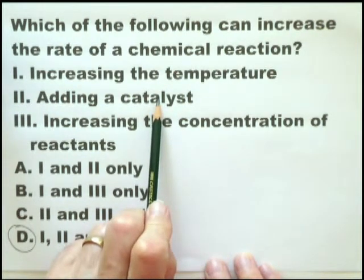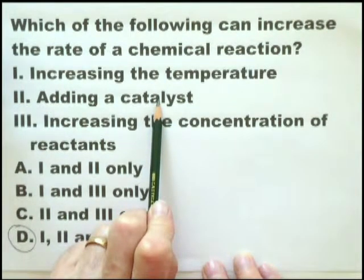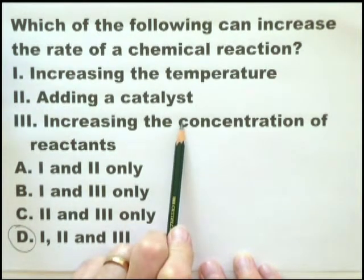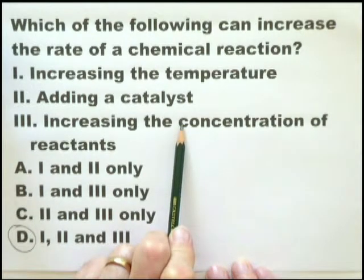Adding a catalyst — you must understand that adding a catalyst reduces the activation energy of the system, thus providing a different pathway or mechanism for the reaction to take place. Increasing the concentration of the reactants simply means the particles or molecules are closer together, giving a greater opportunity for them to collide and for the reaction to take place.